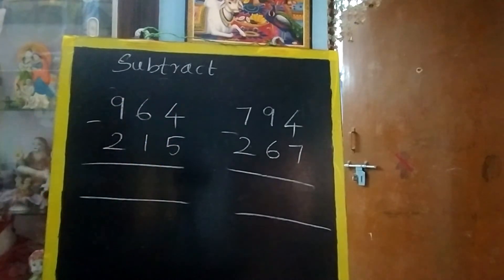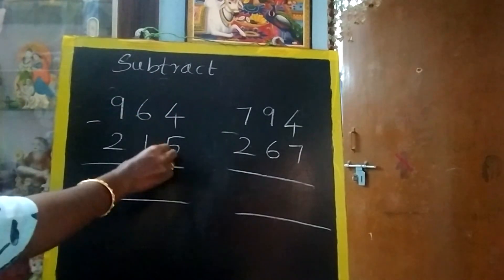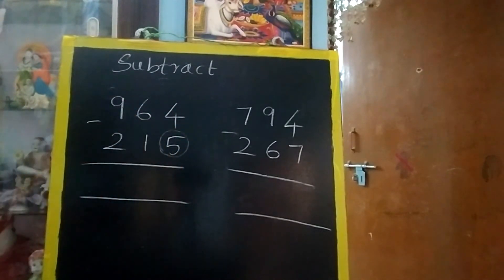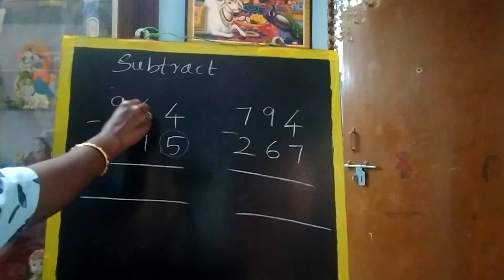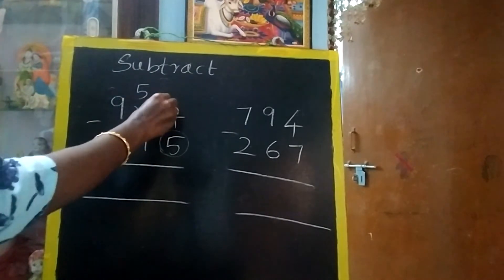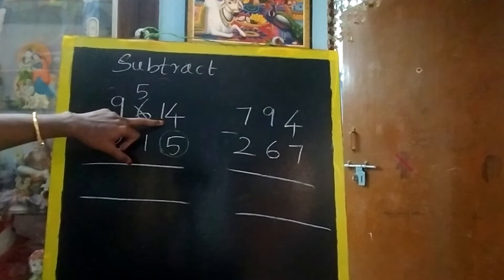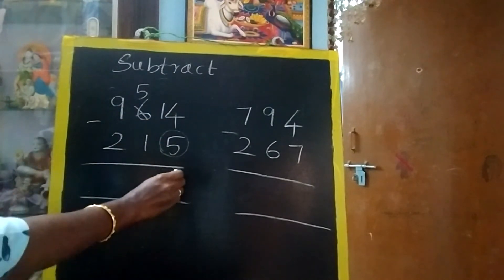So start from one's place. 4 is greater or 5 is greater? 5 is greater. Should we borrow? Yes, you have to borrow. So cancel 5. Give 1. It becomes 14. 14 minus 5, 9.